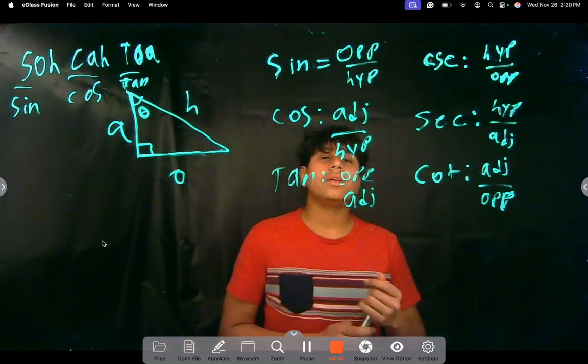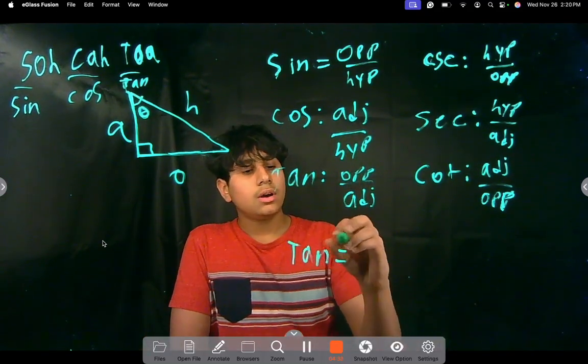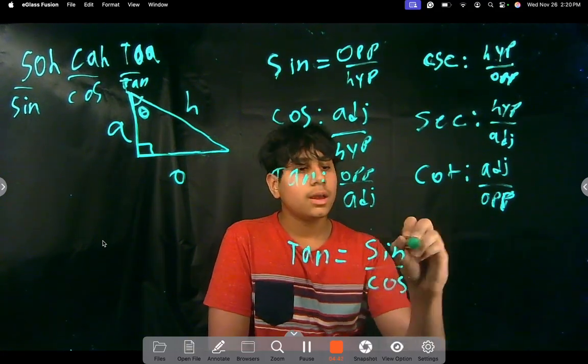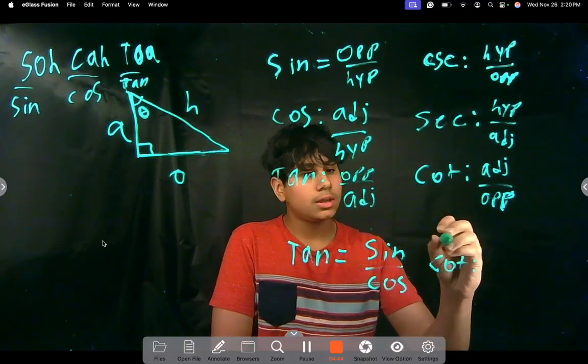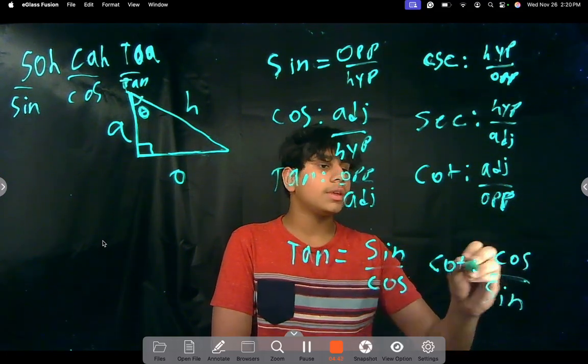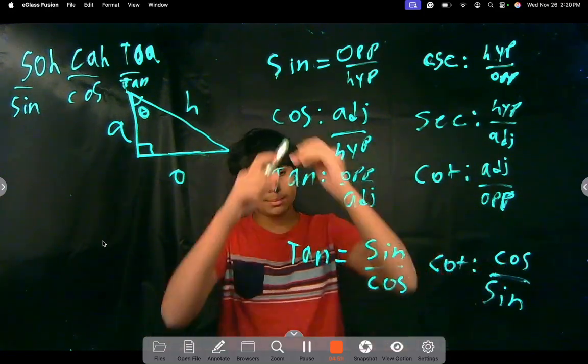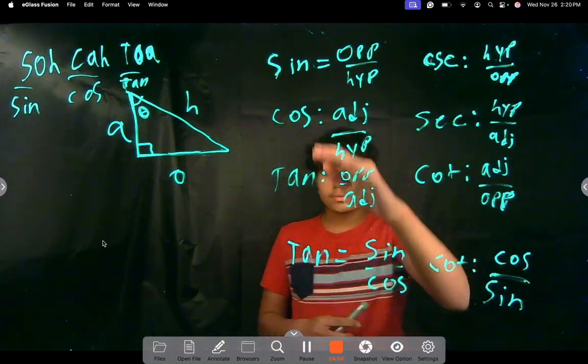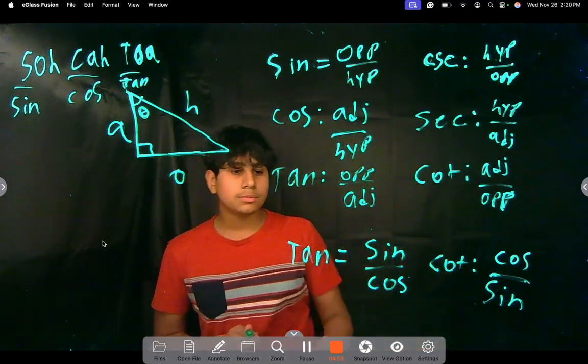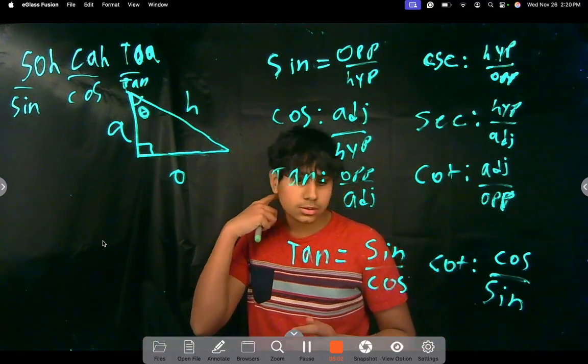And one more interesting thing I'm gonna say before I end this video. Is that tangent is written as sine over cos. So, then cot will be written as cos over sine. So, yeah. You can, basically, using sine and cos, you can make all of these. Like, all of these are relative to sine and cos. Yep, that's the basics of trigonometry. I hope you learned something, and we'll be using these in the next few videos.